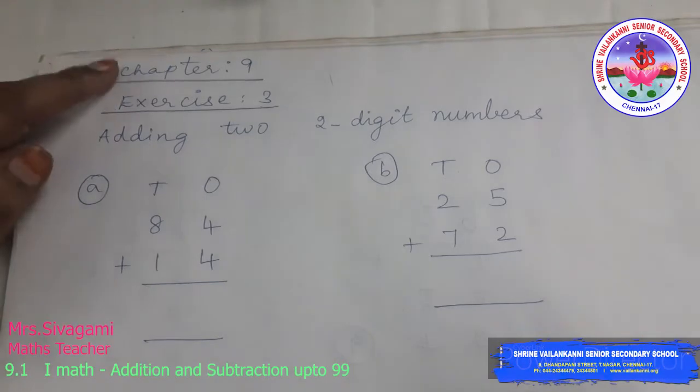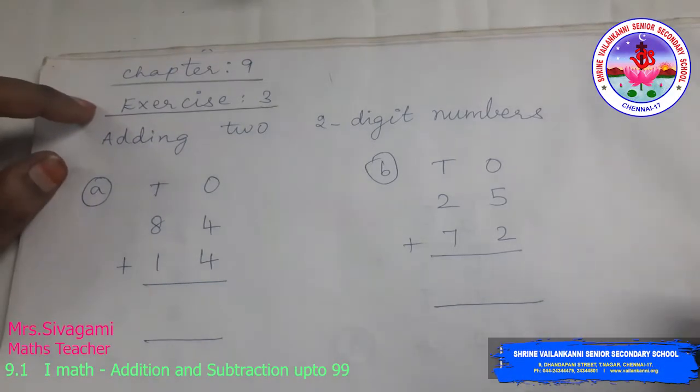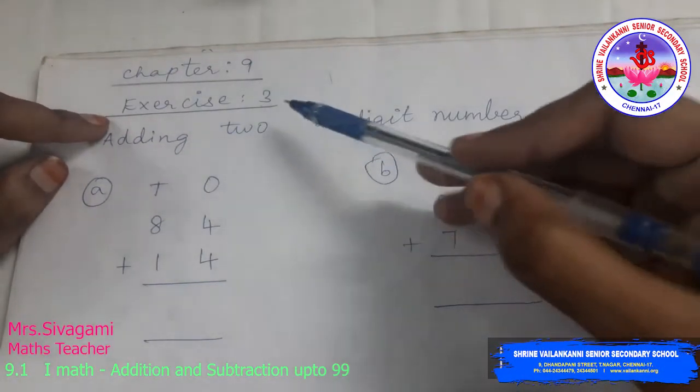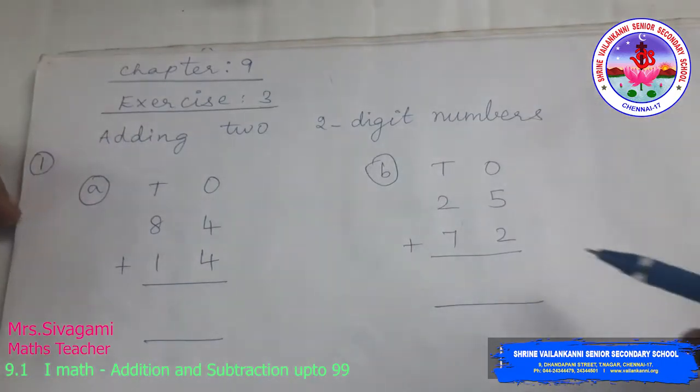Good day children. In chapter 9, addition and subtraction up to 99, we are going to see exercise 3. In exercise 3, we are going to add two 2-digit numbers.